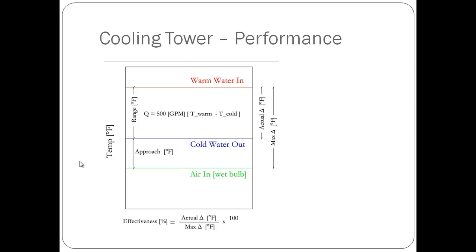The smaller the approach, the better the cooling tower is at providing cooling. The wet bulb temperature of the entering air is the lowest temperature the exiting water can reach. If a cooling tower has a zero degree approach, then the cooling tower is using all of the available heat exchange from the air to cool the water.